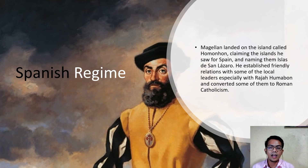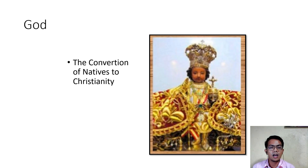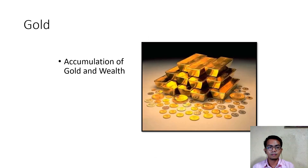Magellan landed on the island called Homonhon, claiming the islands he saw for Spain and naming them Islas de San Lazaro. He established friendly relationships with some local leaders, especially Raja Humabon, and converted some of them to Roman Catholicism. There were three reasons for colonization: God — the conversion of natives to Christianity; Gold — the accumulation of gold and wealth; and Glory — the supremacy of Spain over Portugal as a superpower.